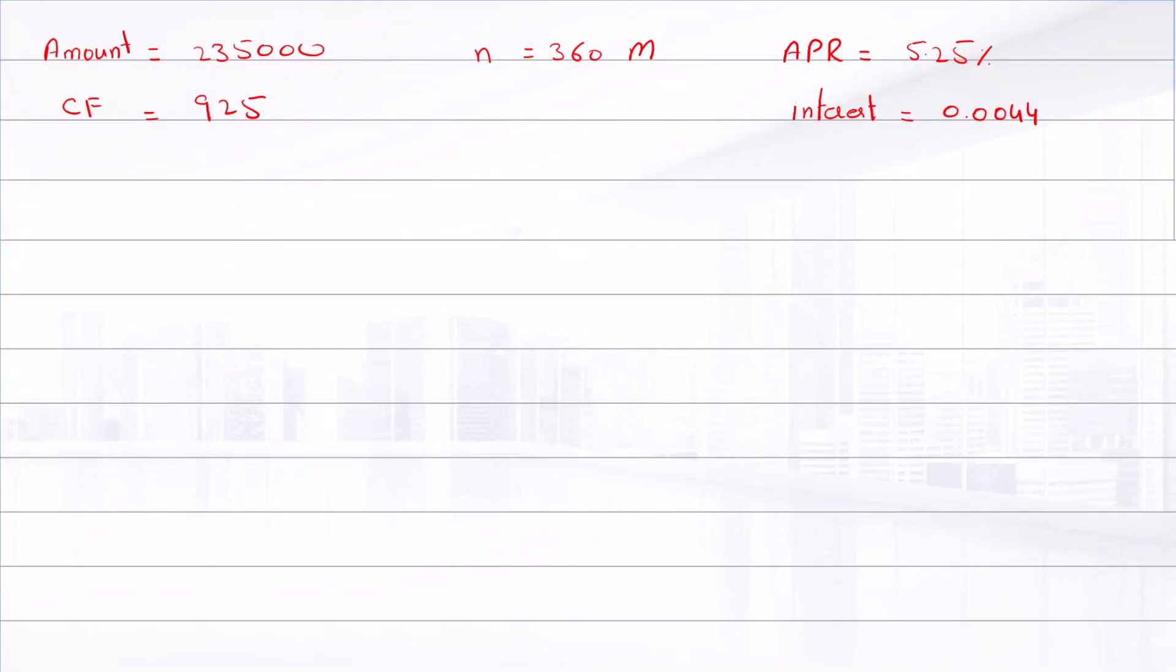So the present value of 925 monthly payments is: present value equals cash flow times [1 over i minus 1 over i times (1 plus i) raised to power n], which is 360.